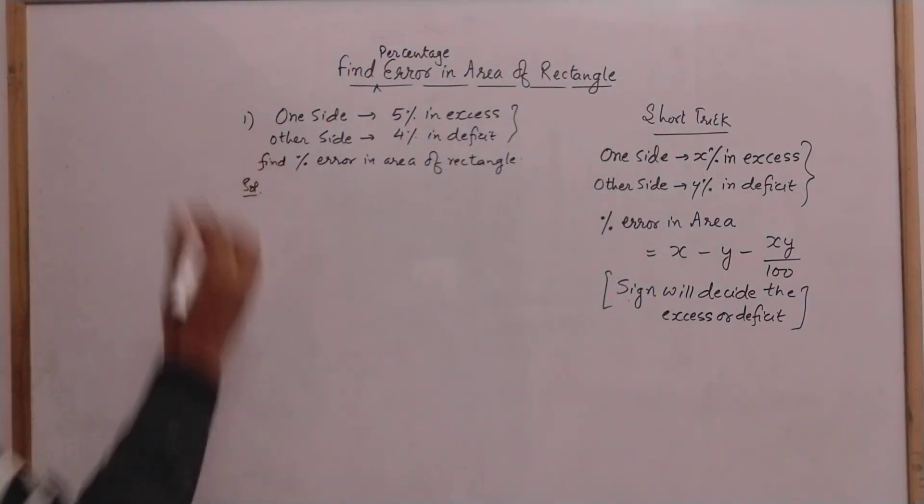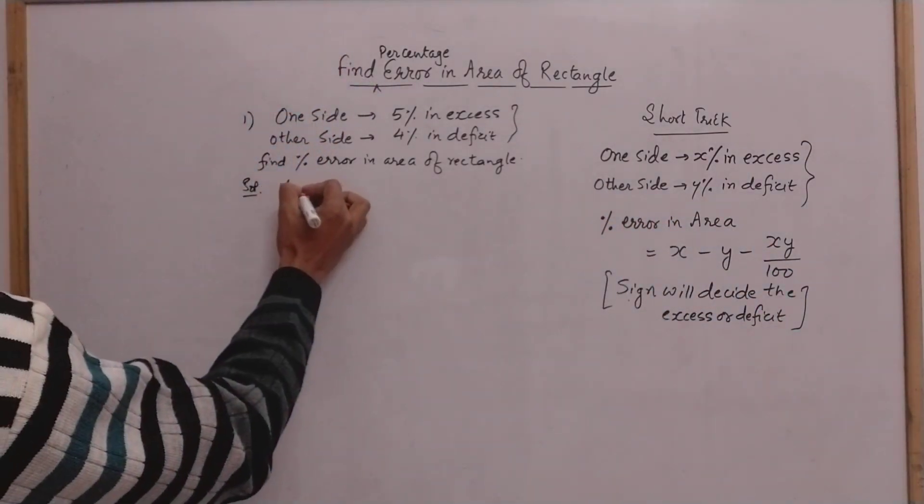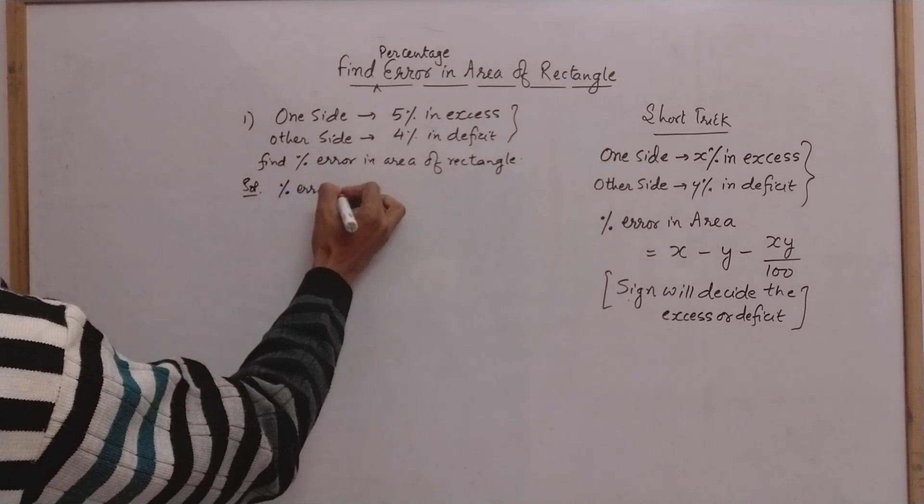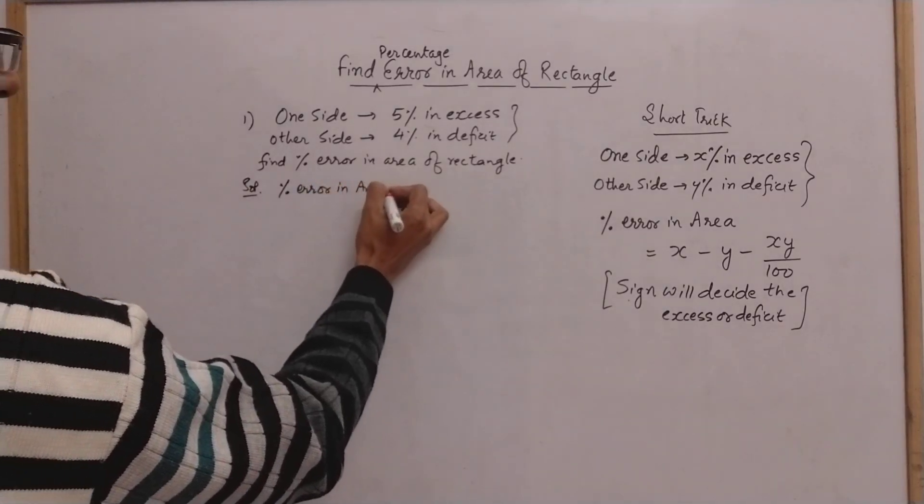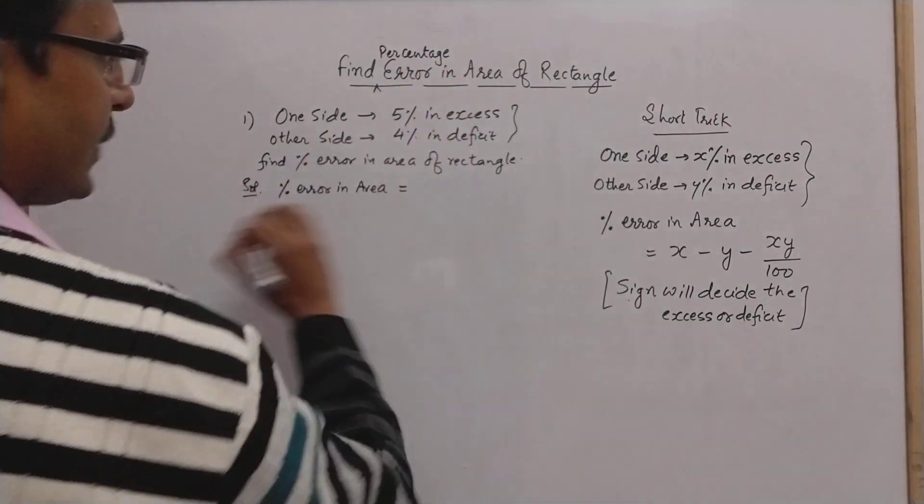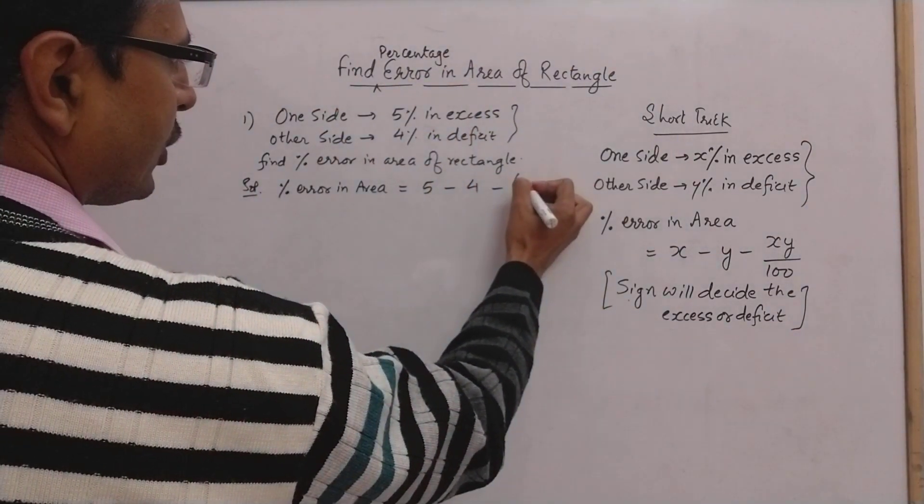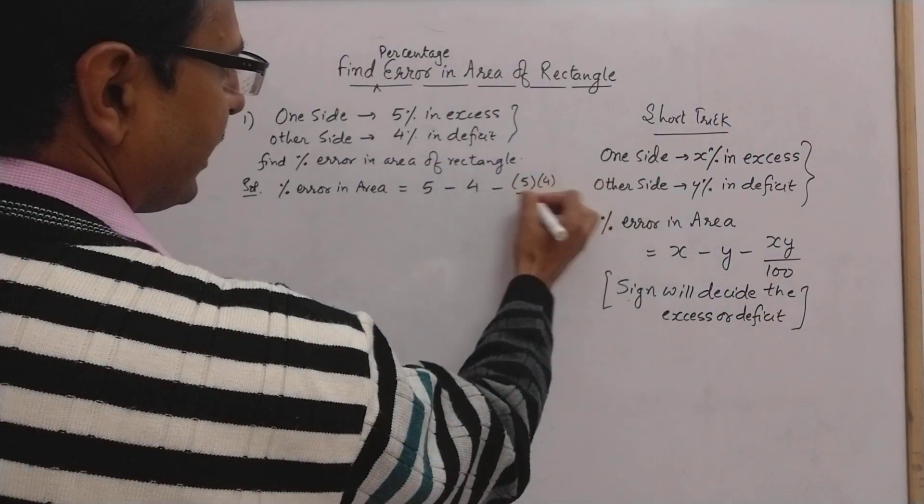Use the short trick now and we can find the percentage area directly. Percentage error in area will be equal to x minus y, so this is x and this is y, so x minus y minus the product of x and y divided by 100.